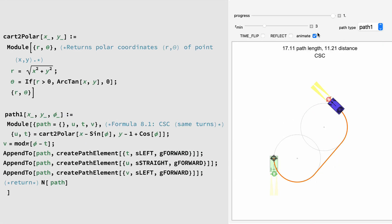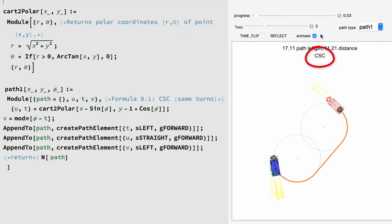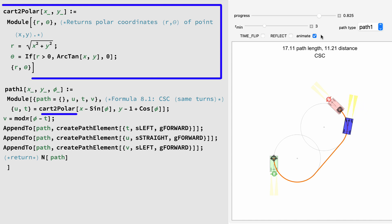Let's take a look at the first function. Path type 1 is a CSC path, which means curve-straight-curve, where both C's are in the same direction. We simply convert an offset position from Cartesian coordinates to polar coordinates, and then find the shortest angle.